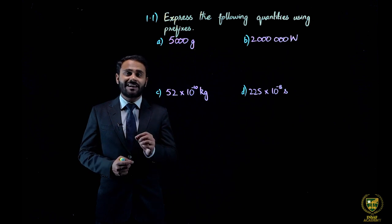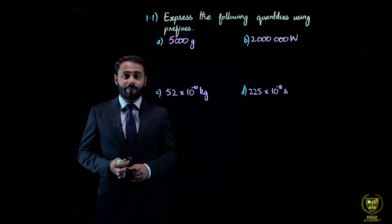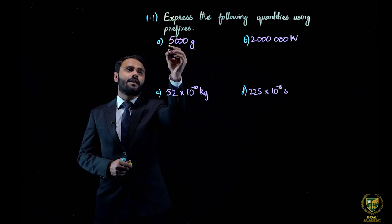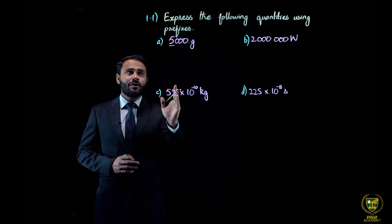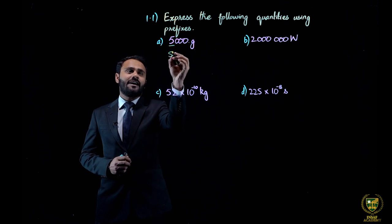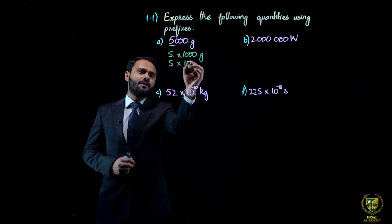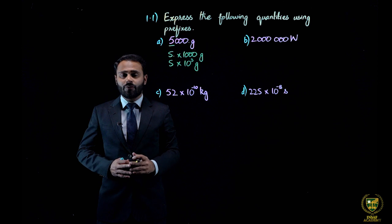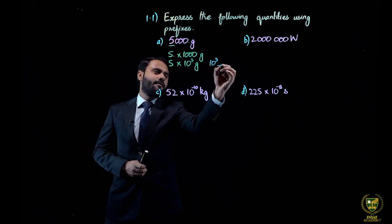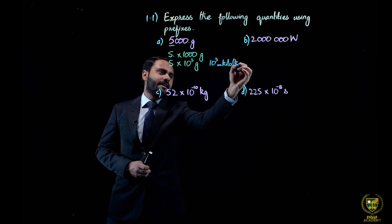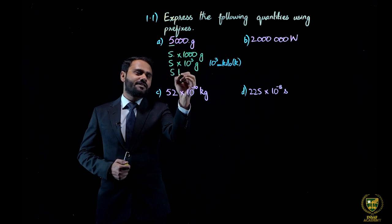According to standard form, the point lies after the first non-zero digit. In part A, the first non-zero digit is 5. So we move the point 3 spaces to the left side. We can write it as 5 into 10 raised to the power 3 grams. We know that 10 raised to the power 3 has the prefix kilo. So the answer is 5 kilogram.